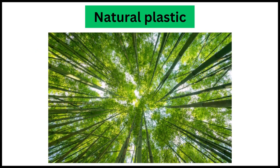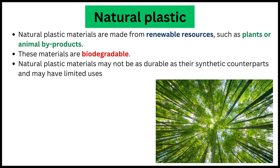Let's discuss natural plastic materials first. Natural plastic materials are made from renewable resources such as plants or animal byproducts. These materials are biodegradable, meaning they can decompose naturally over time. They are eco-friendly, but natural plastic materials may not be as durable compared to synthetic plastic materials and also have limited uses.